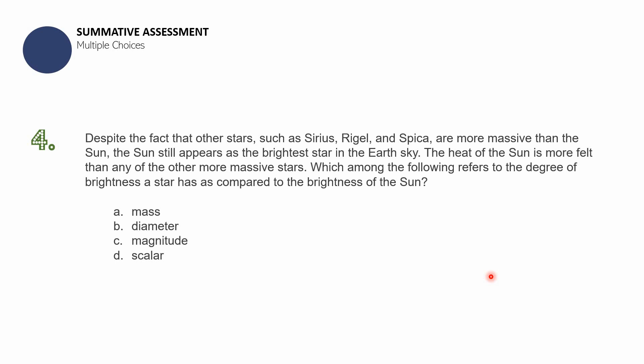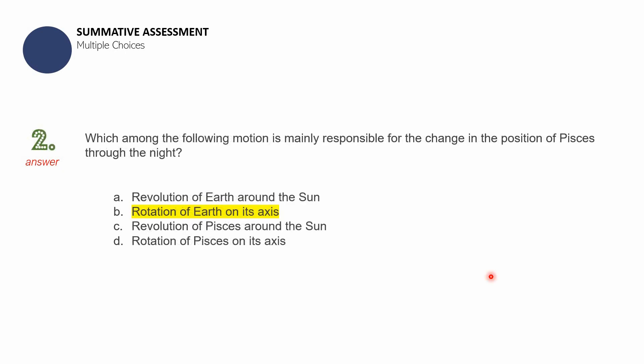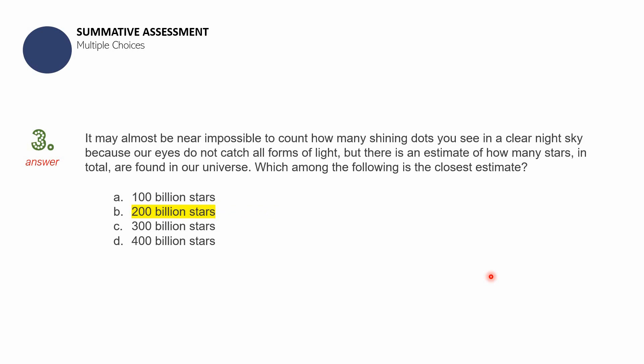Finalize your answers — you only have four items. Let us now check your work. For question number one, the answer is B — Earth orbits the Sun. That is why we see Cygnus in September but it disappears in March. For question number two, the answer is B — rotation of the Earth on its axis, because we are talking about position changes throughout the night. For question number three, the answer is B — 200 billion stars.